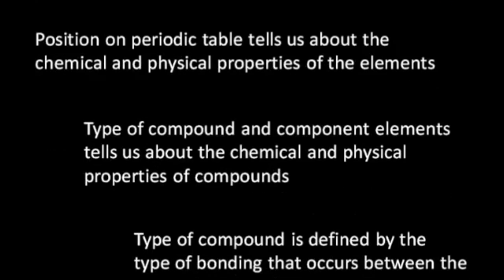The position on the periodic table tells us about the chemical and physical properties of the elements. But also the type of compound and the component elements tells us something about the chemical and physical properties of the compounds. So we need to be familiar with the elements and some common types of compounds, and from that familiarity you can predict the types of physical and chemical properties of those compounds.